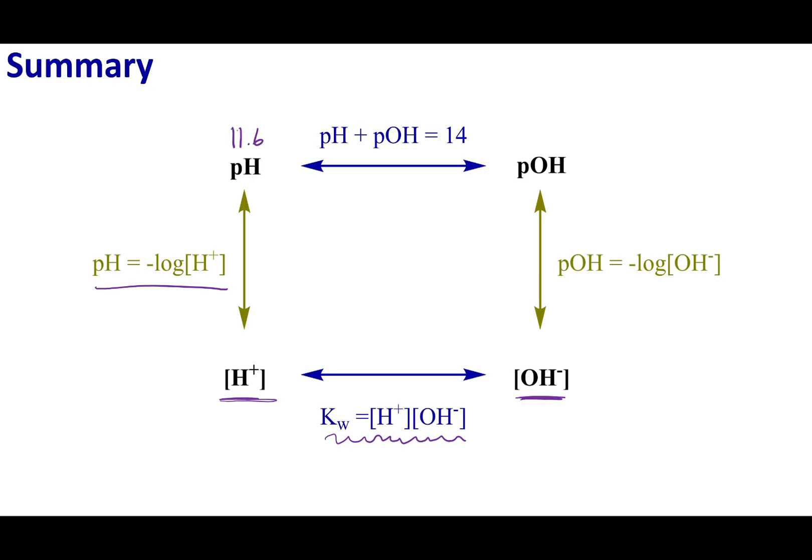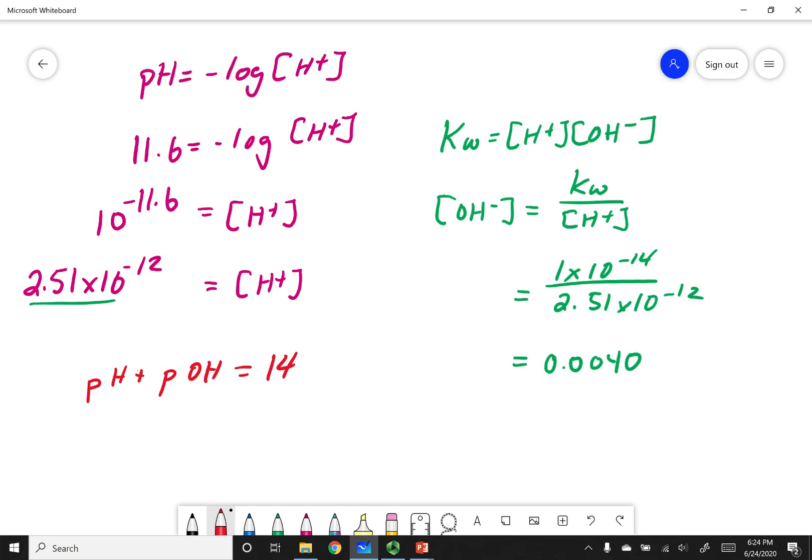Now we could have gone another route. What we could have done is figured out the pOH. I'm going to start from here at 11.6, and using this relationship, I'm going to figure out what my pOH is going to be. pH plus pOH equals 14. Or in other words, pOH equals 14 minus my pH. So 14 minus 11.6 gets us a value of 2.4.